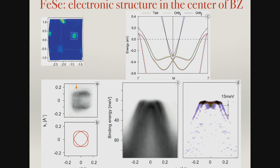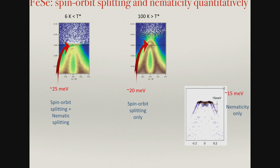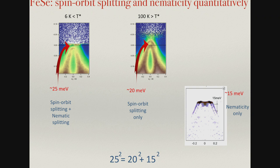Since xz and yz orbitals are non-degenerate at the center of the Brillouin zone due to spin-orbit interaction, one may ask how these two effects coexist. The answer was very interesting: we can switch off nematicity by heating the sample above the transition temperature and still observe the splitting — spin-orbit interaction gives 20 meV. Below the transition temperature, where both nematicity and spin-orbit interaction lift the degeneracy, we observe a splitting of about 25 meV. We can attribute approximately 15 meV only to nematicity near the Fermi level. One adds in quadrature, which fits the scenario perfectly. One should also note that since spin-orbit interaction is sizable, xz and yz are of course mixed — there is no clear xz/yz separation in the center of the Brillouin zone.